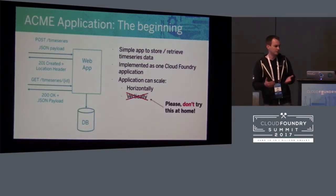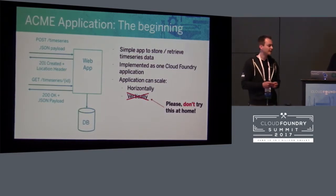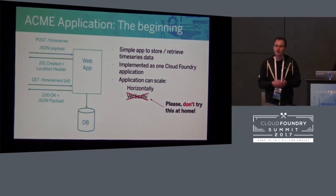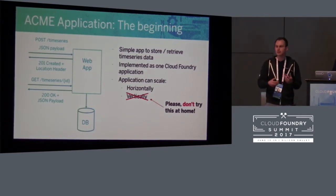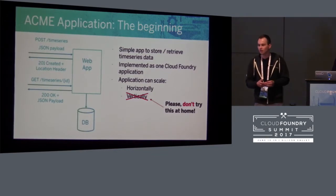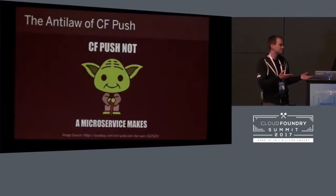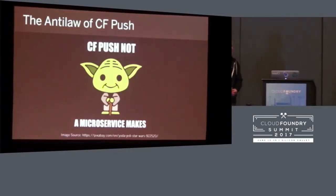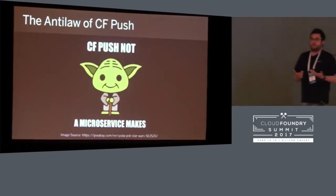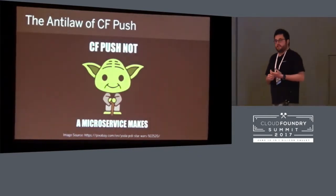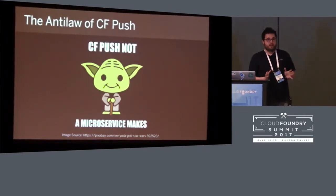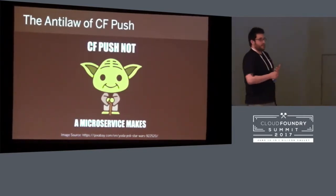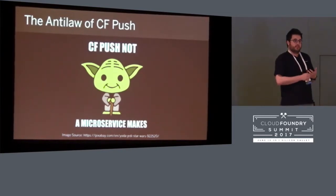It can also be scaled vertically — don't do that, please don't, not good for you. Now, I already hear some of you thinking: this doesn't really look like a microservice architecture at all. Turns out you're actually right. This is something you see sometimes where people assume that just by the power of CF Push, your code — maybe your legacy application — becomes immediately a microservice. That's not how it works.